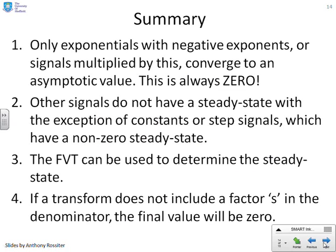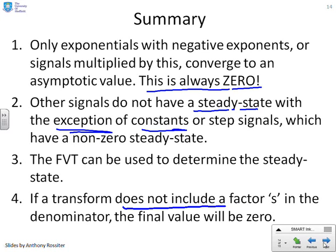A summary. Only exponentials with negative exponents, or signals multiplied by exponentials with negative exponents, converge to an asymptotic value — and this asymptotic value will be zero. Other signals do not have a steady state, with one exception: constants or steps, which have a non-zero steady state. The Final Value Theorem can be used to determine the steady state, but only for signals that have a steady state. If a transform does not include a factor s in the denominator, and it does have an asymptotic value, then that final value will be zero.